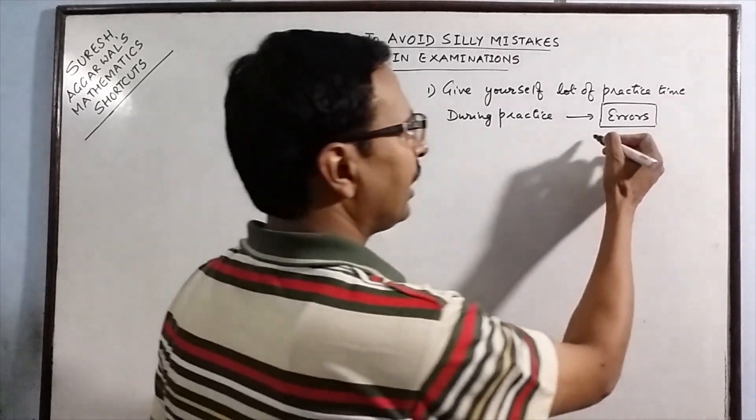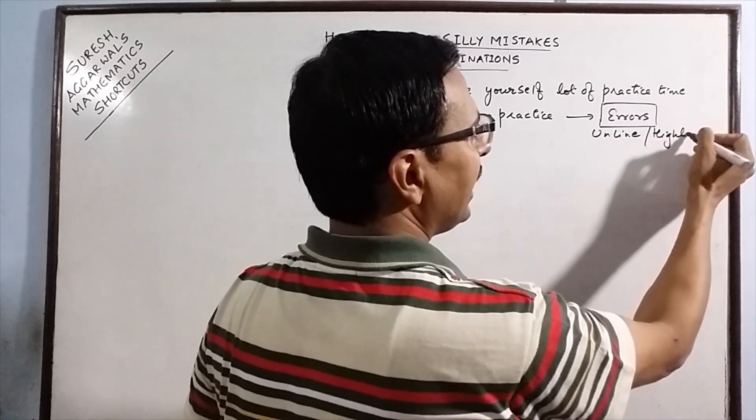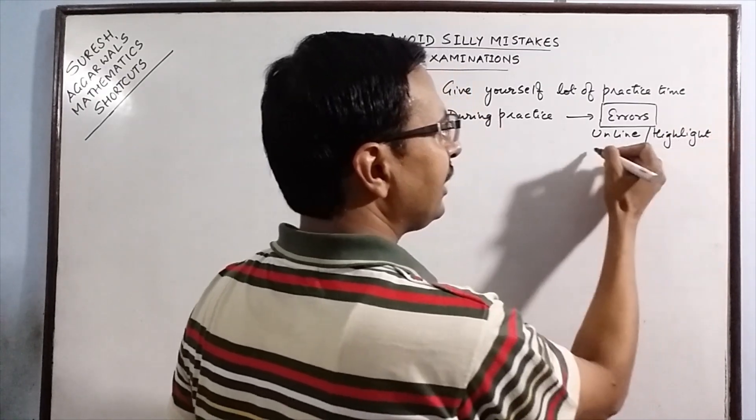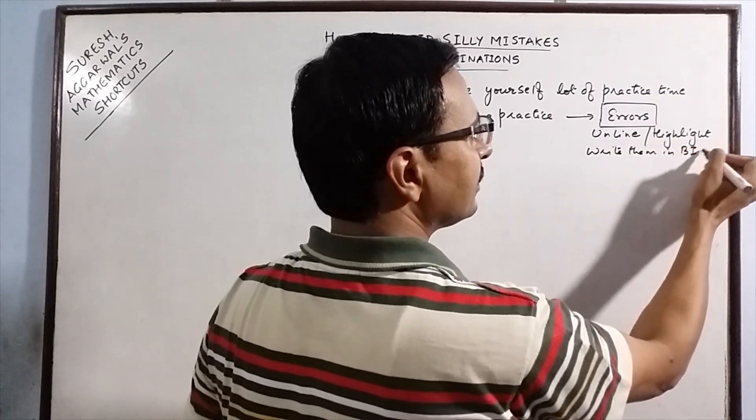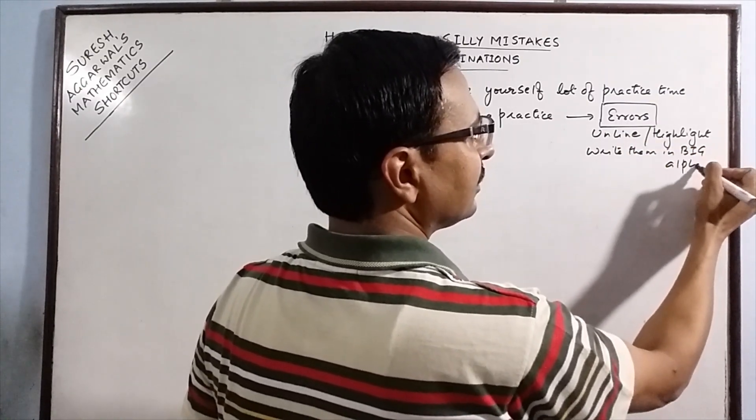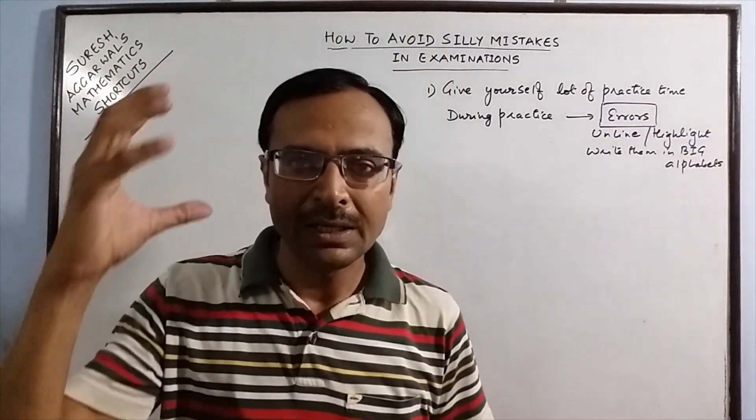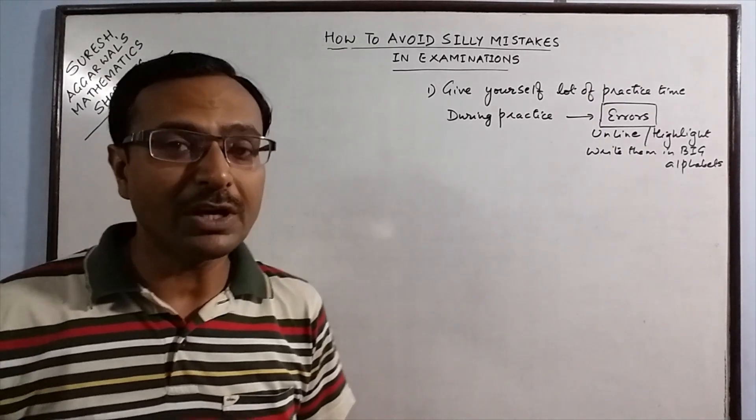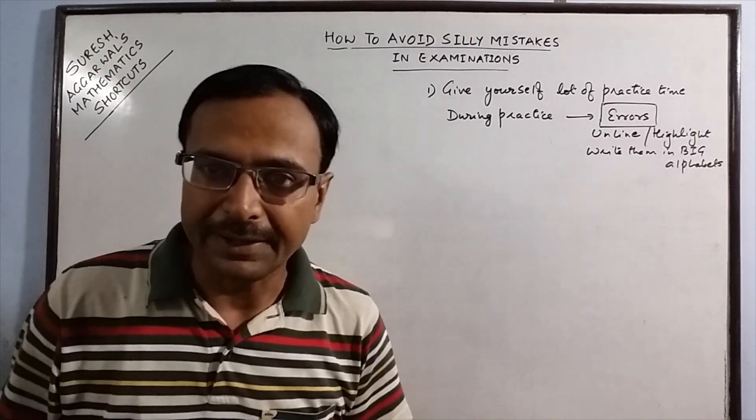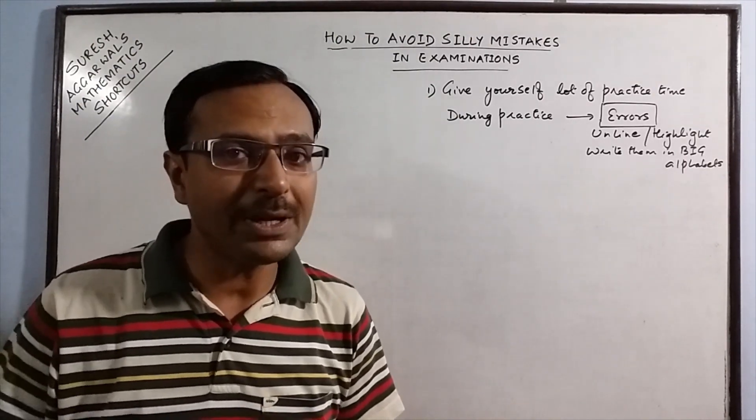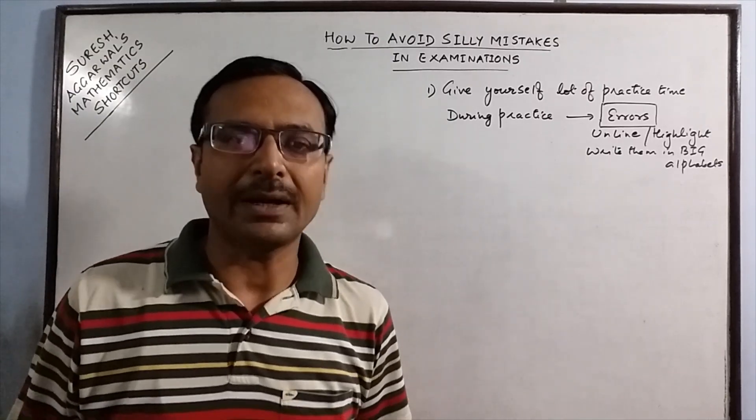We can underline those errors. We can highlight using a highlighter. We can write them in big alphabets so that it creates a map in the mind that you will remember for life. So these errors are not to be neglected. You have to keep a record of what kind of errors you are making while practicing mathematics.